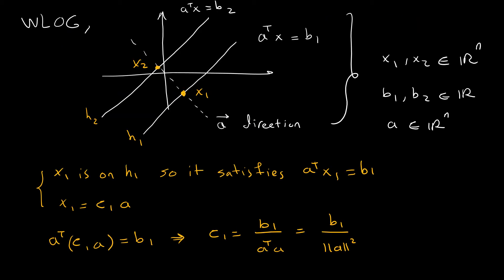Without loss of generality, I will work with two hyperplanes in R^n. I have x1 on the first hyperplane and x2 on the second hyperplane. x1 and x2 are in R^n, b1 and b2 are scalars in R, and a is in R^n. This dotted direction represents vector a.